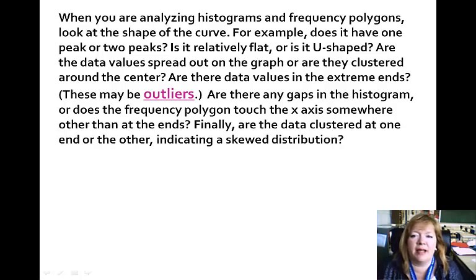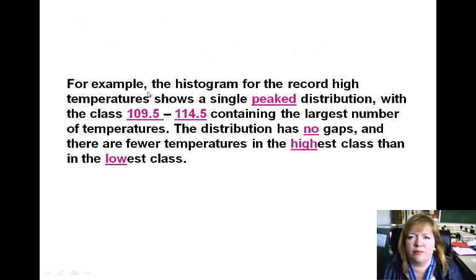And last but not least, it says the histogram for the record high temperatures shows single peak distribution with the 109.5 to 114.5 containing the largest number of temperatures. That means most of the state's record highs between that data range. The distribution has no gaps and there are fewer temperatures in the highest class than the lowest class. Well, that can indicate that it's warmer than it is colder in most of the United States. We all don't live in Alaska. Alright, that wraps up 2-3. Woohoo! And I will see you tomorrow.